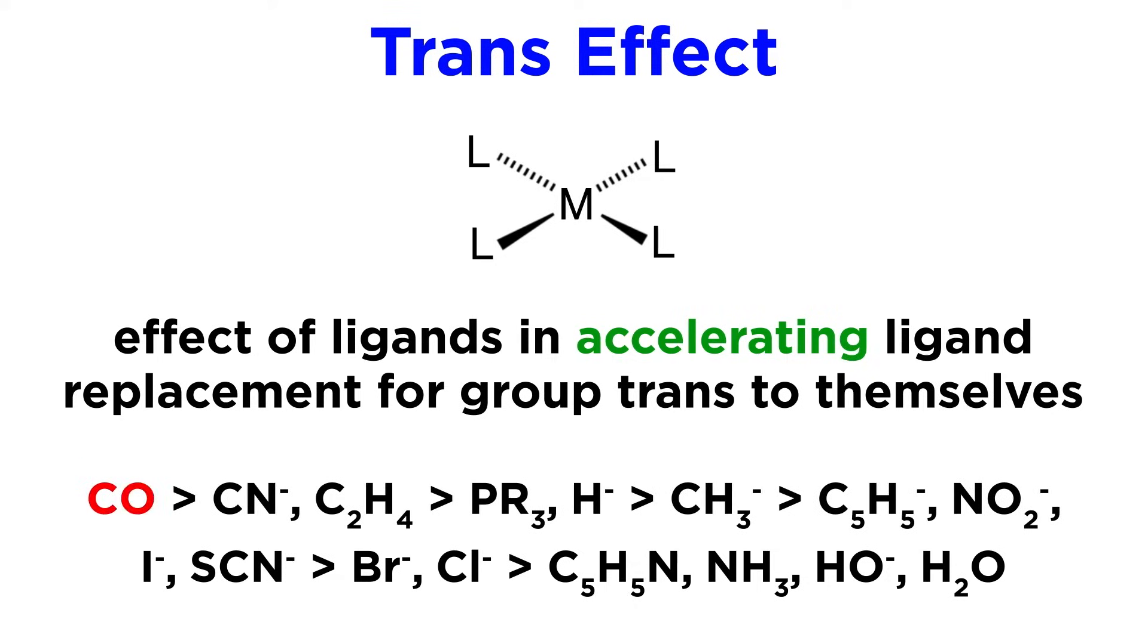We have carbonyl, cyanide, and ethene at the top. These will strongly promote the leaving of the ligand across from themselves. This is followed by phosphines and hydride, then methanide, then the cyclopentadienyl anion, nitrite, iodide, and thiocyanate, followed by bromide and chloride, then pyridine, ammonia, hydroxide, and water.